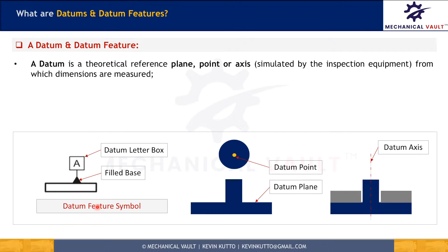The name of the datum is shown by alphabets in the datum letter box, and this datum letter box is connected to the datum feature with a triangular base. This triangular base is generally filled.